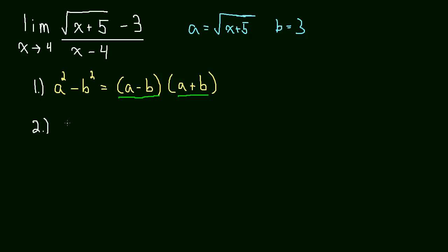So step two will be to utilize everything I just talked about. It's the limit as x approaches 4 of the square root of x plus 5 minus 3 all over x minus 4. And we said we're going to multiply by a plus b. So let's do that.